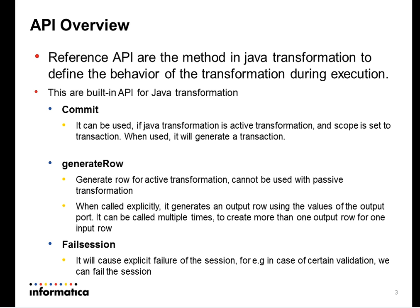The Commit API is used by the Java transformation when the Java transformation is selected as the active transformation and the scope is set to transaction. When you use the Commit, it generates a transaction.